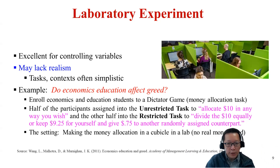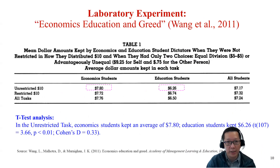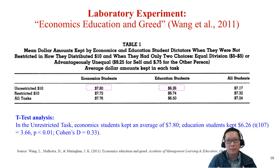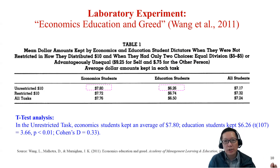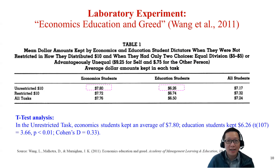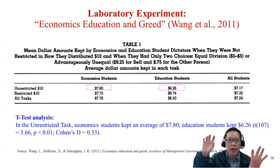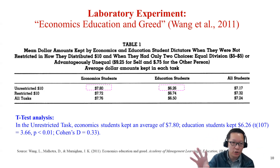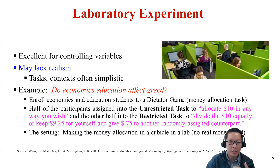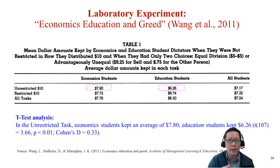Here's a great example of a lab experiment. Wang and Franz wanted to know whether people who had taken economics courses would be more greedy than students who had not. They randomized students majoring in economics versus students majoring in education, and had them play what they call dictator games — a money allocation game. They gave people real or hypothetical money and asked them to choose how much to keep or give away.